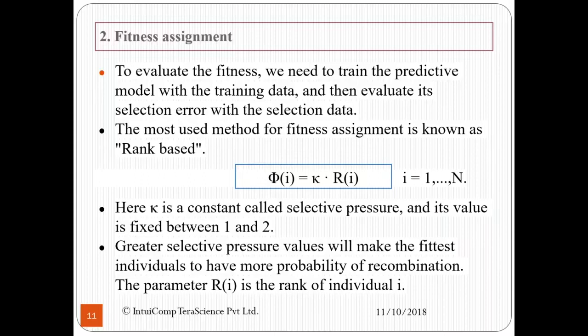Here, κ is a constant called selective pressure and its value is fixed between 1 and 2. Greater selective pressure values will make the fittest individuals have more probability of recombination. The parameter R is the rank of individual i.